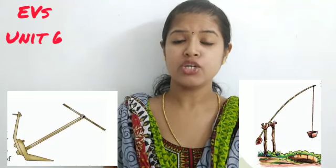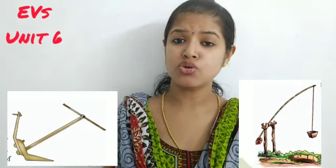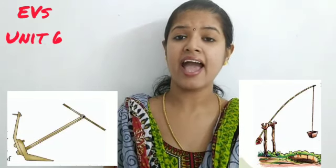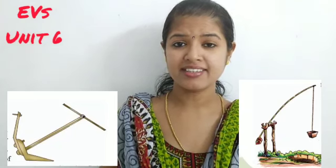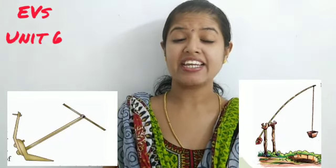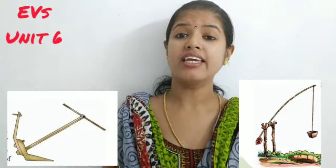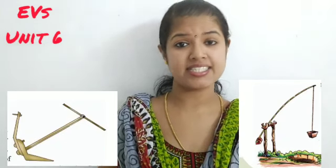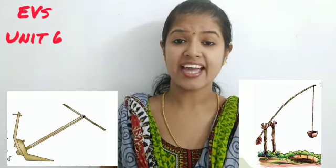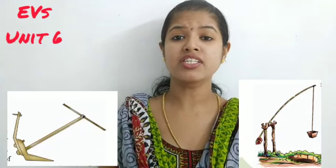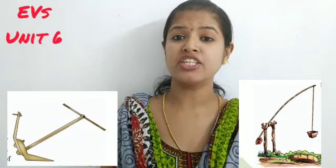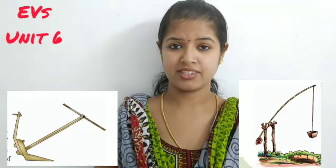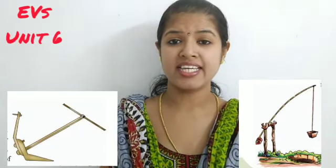But nowadays, you can see that these two tools are not at all seen in the hands of the farmers. What may be the reason, children? It may be due to the invention of machines like tractors. Tractors are doing the work of the plough, and there are other machines to drain the water into the field. So that's why this is not seen nowadays.